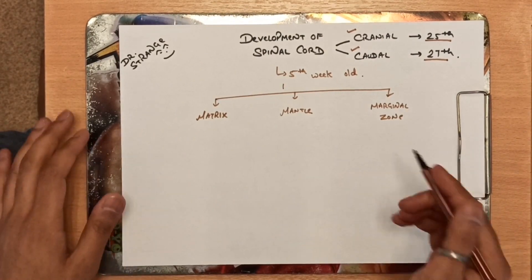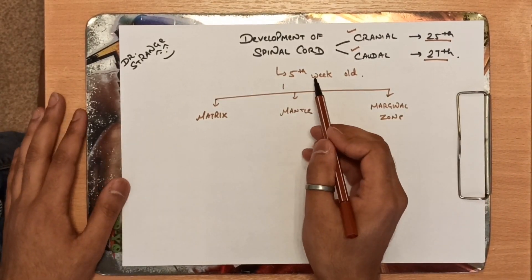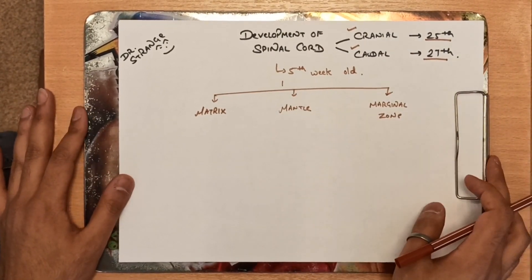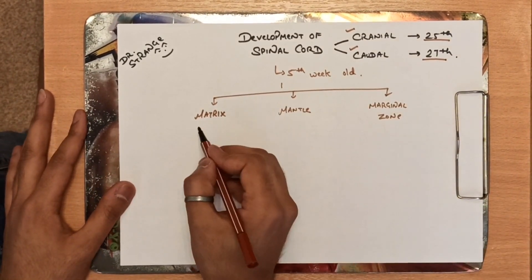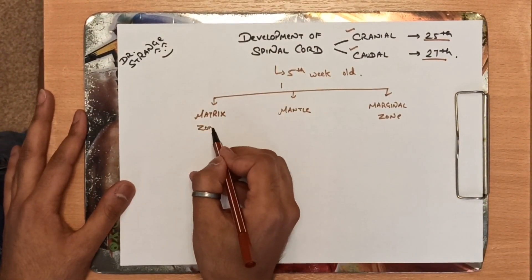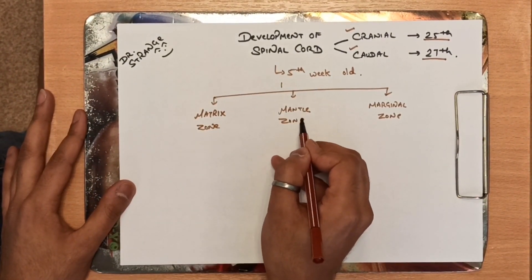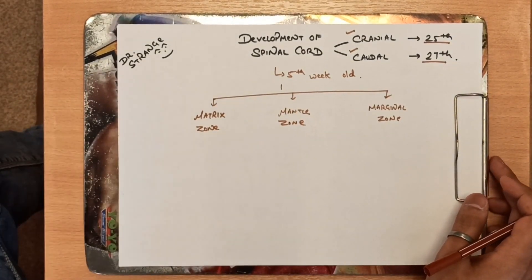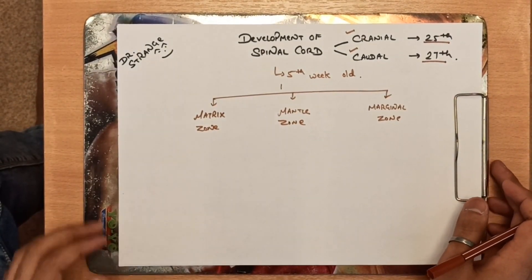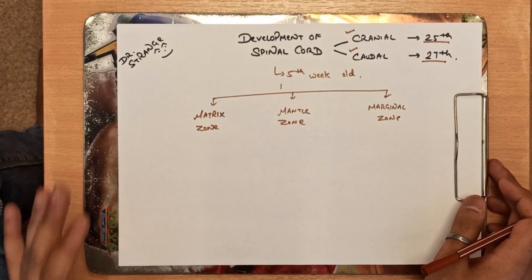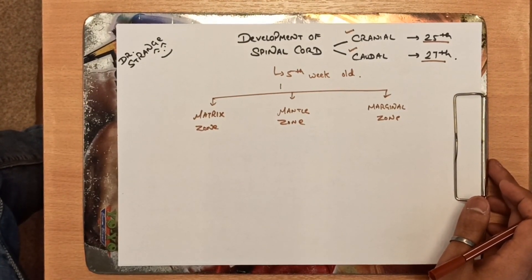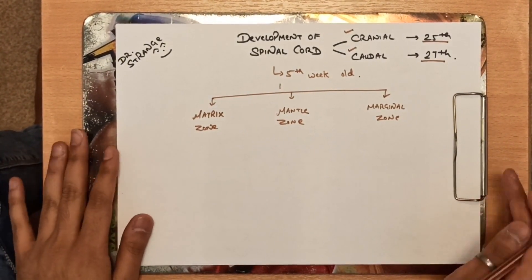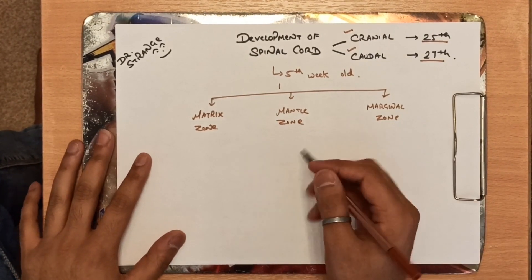The transverse section of a five-week-old fetus shows three zones: the matrix zone, the mantle zone, and the marginal zone. Later on in this video I'll tell you about how the gray matter and white matter of the spinal cord is formed, and how the spinal cord gray matter takes its H-shape structure. Now let me make a diagram.